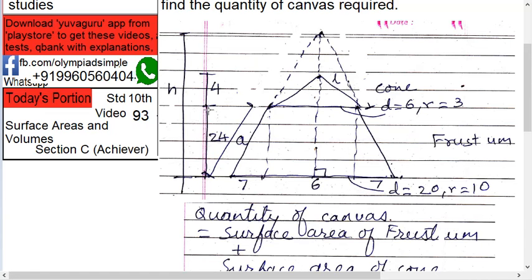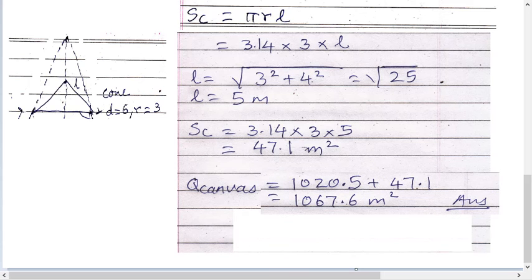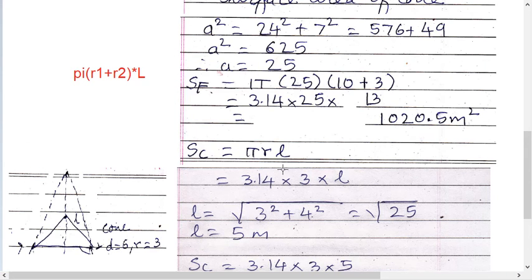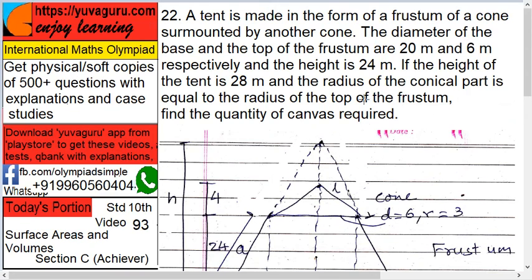Surface area of the cone is πrl. r is 3, height is 4 (total height was 28, frustum was 24, so cone is 4). Slant height l = √(3² + 4²) = √25 = 5. So l equals 5. Surface area of cone is πrl.